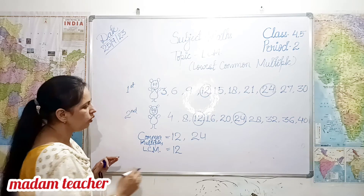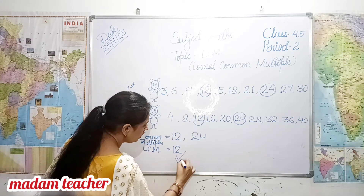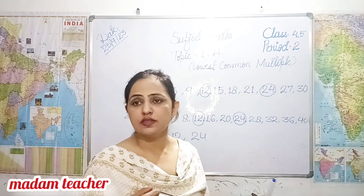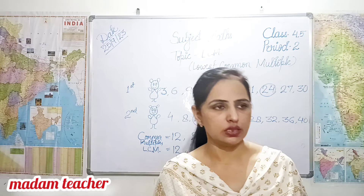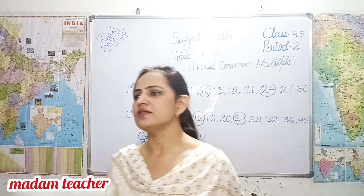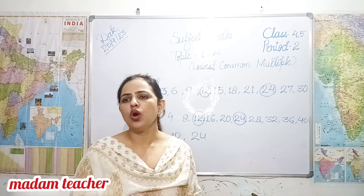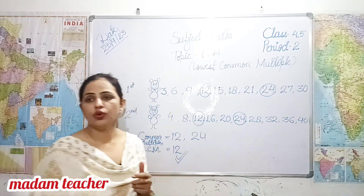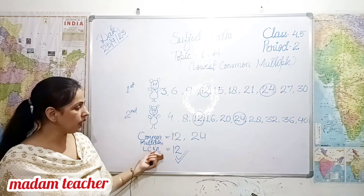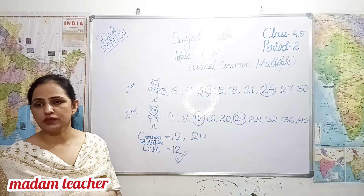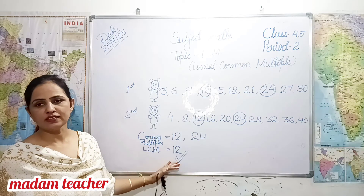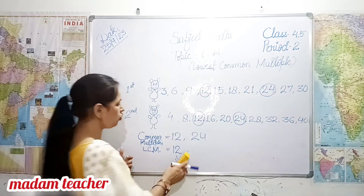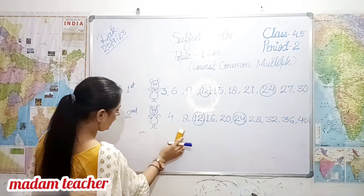So this will be the answer. We will find out the LCM, which we have done in the story with both rabbits. Now we will solve with other digits.